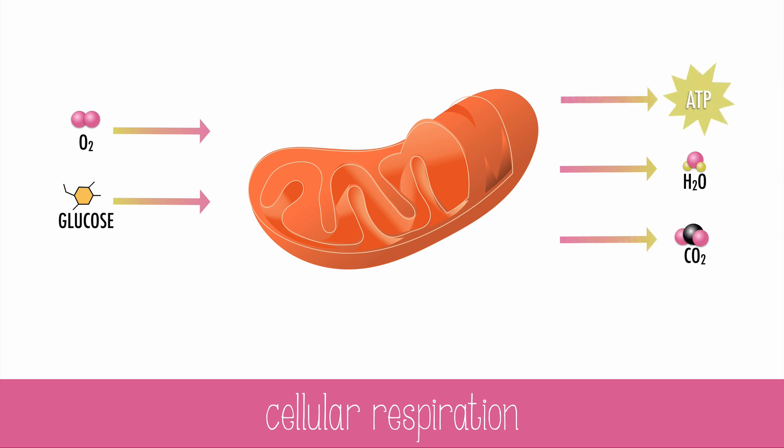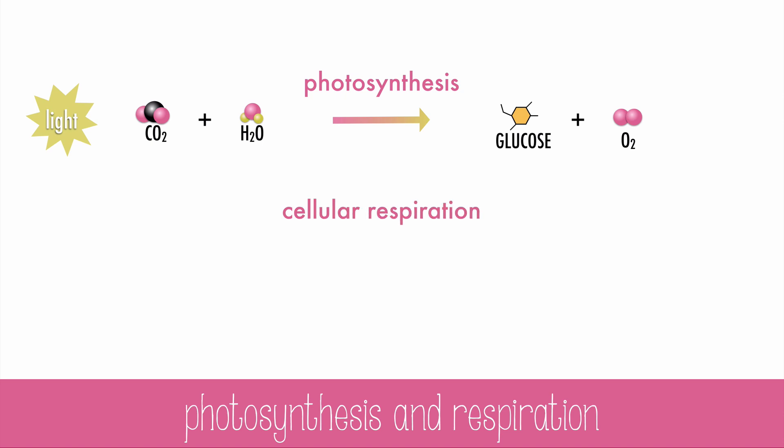Maybe you noticed that these chemicals are actually a bit familiar. Here's the equation for photosynthesis. Carbon dioxide and water, with energy from light, create glucose and oxygen. Those products of photosynthesis are the reactants of respiration. And the products of respiration are the reactants of photosynthesis. They're opposites. They cycle continuously.